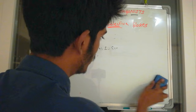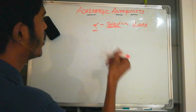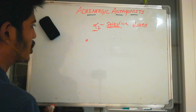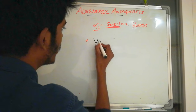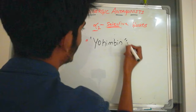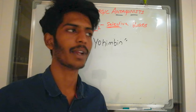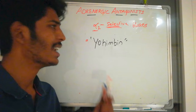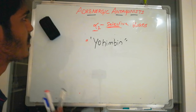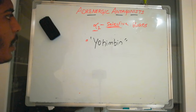Now let's discuss alpha 2 selective blockers. Alpha 2 selective blockers have only one drug: yohimbine. Yohimbine is derived from the yohimbine tree and was earlier used for sexual stimulation and other purposes, but it has no well-established clinical activity, so it is not used clinically these days.